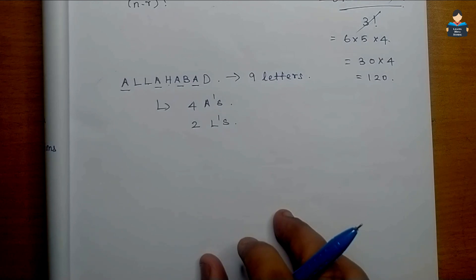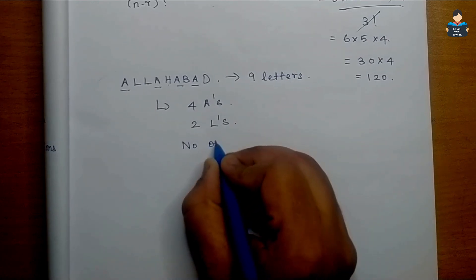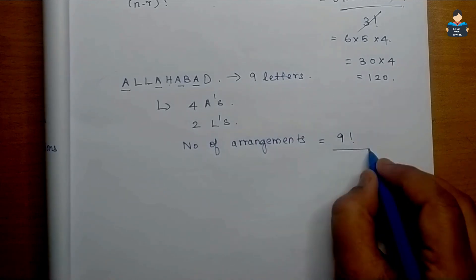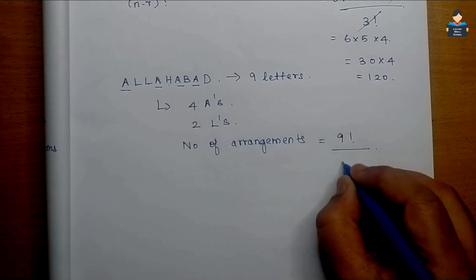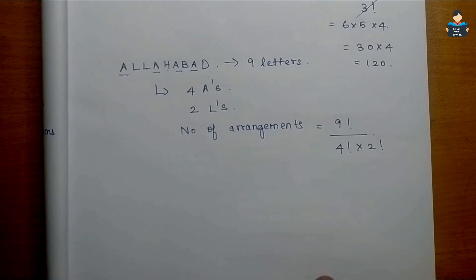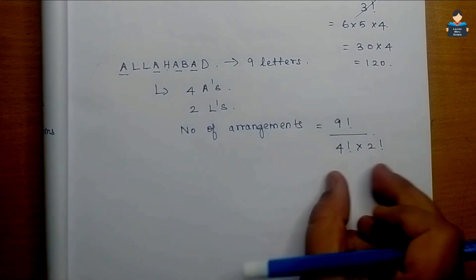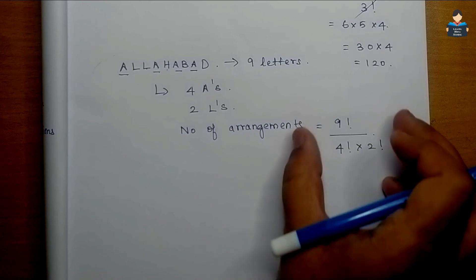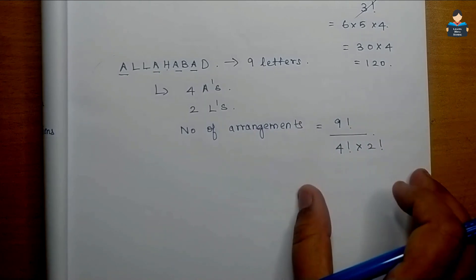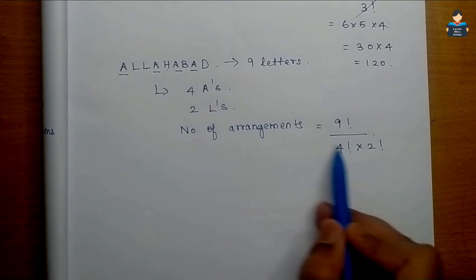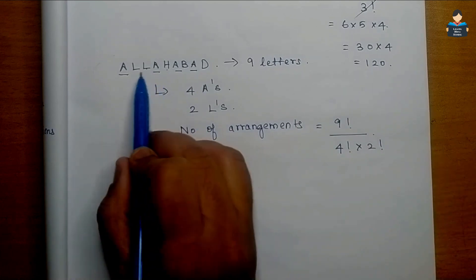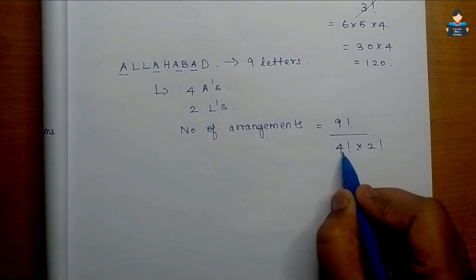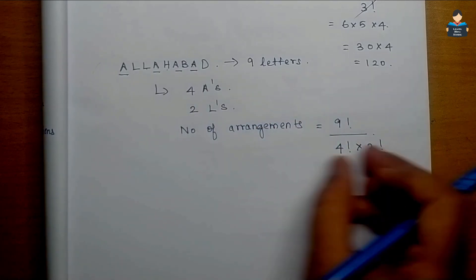The number of arrangements is 9 factorial divided by 4 factorial into 2 factorial — that's accounting for the four A's and two L's that repeat. We divide by 4 factorial because of the four A's, and by 2 factorial because of the two L's. This avoids counting repeated arrangements.